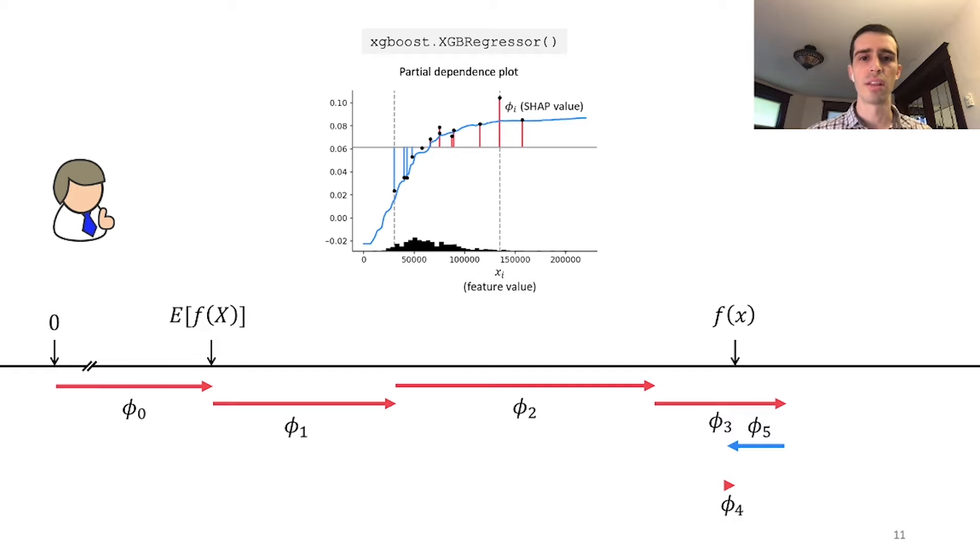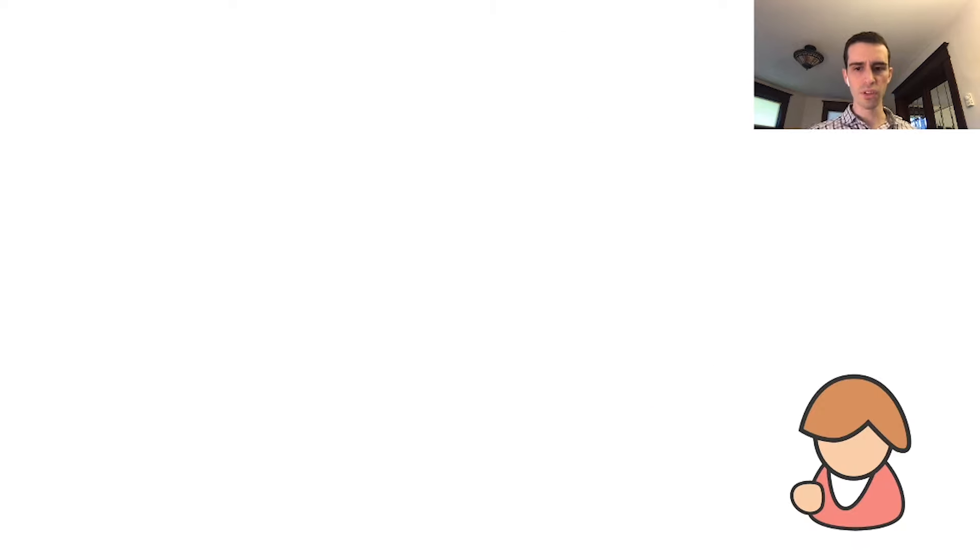Now we see that SHAP values no longer exactly match the partial dependence plot because they account for interaction effects. When you look at a partial dependence plot, you're losing all the high-order interacting information about ANDs and ORs your model may be doing. But SHAP values account for that and distribute that credit down to each feature. You'll see vertical dispersion when you plot many people's SHAP values for a feature.